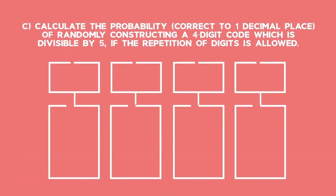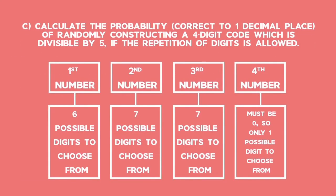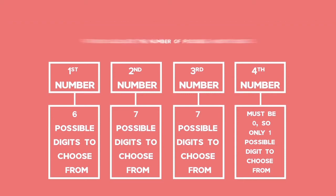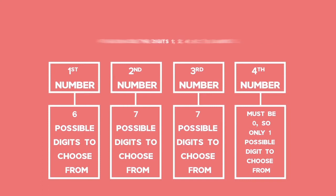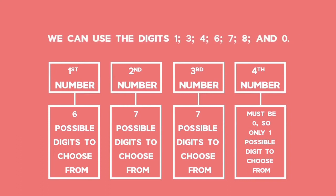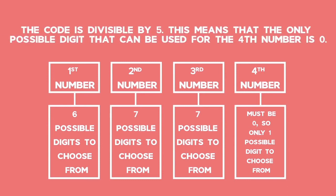Question C asks how you calculate the probability, correct to one decimal place, of randomly constructing a four-digit code which is divisible by 5 if the repetition of digits is allowed. First, calculate the number of possible four-digit codes. We can use the digits 1, 3, 4, 6, 7, 8 and 0. Since the code is divisible by 5, the only possible digit for the fourth number is 0.